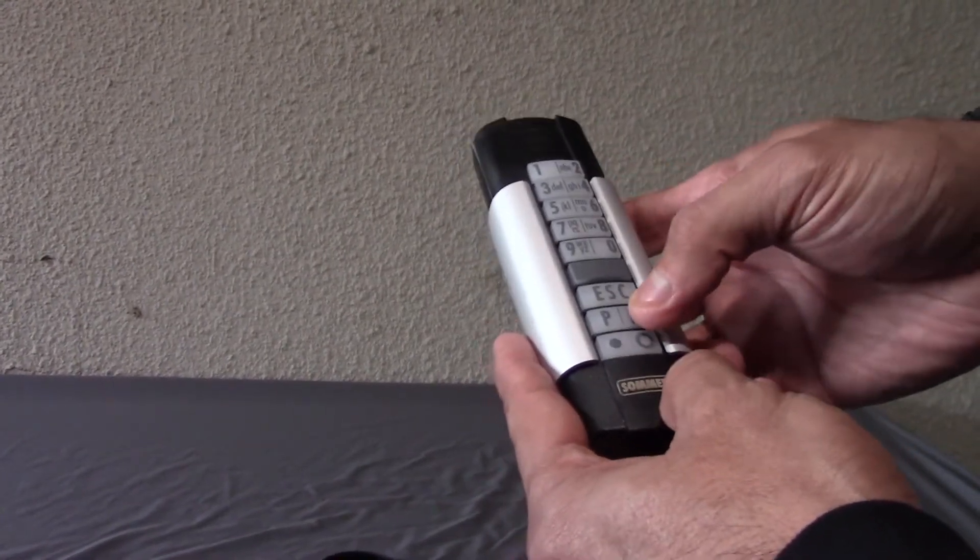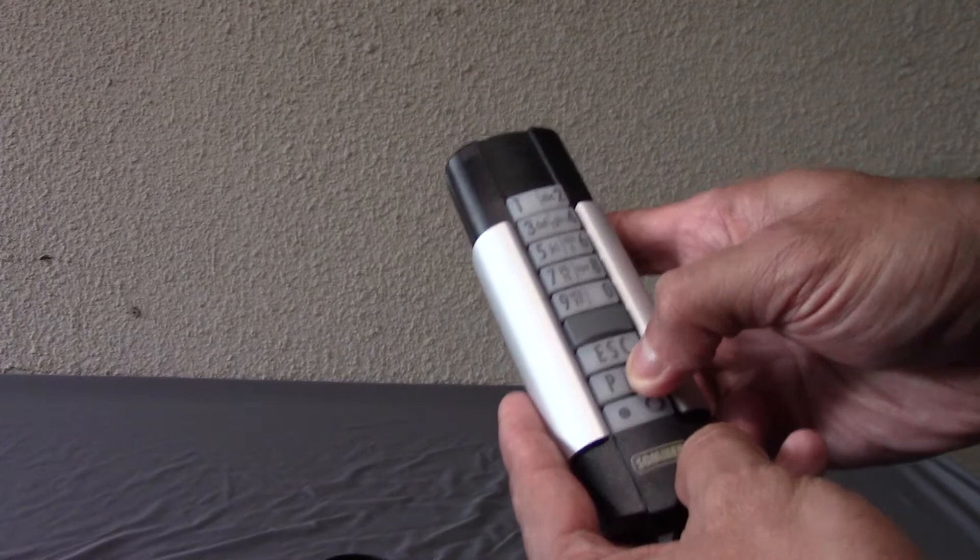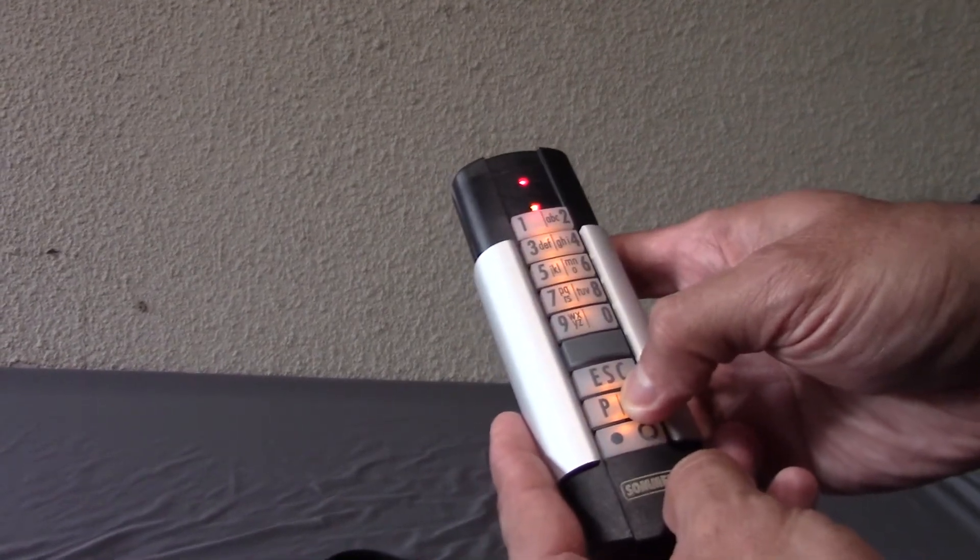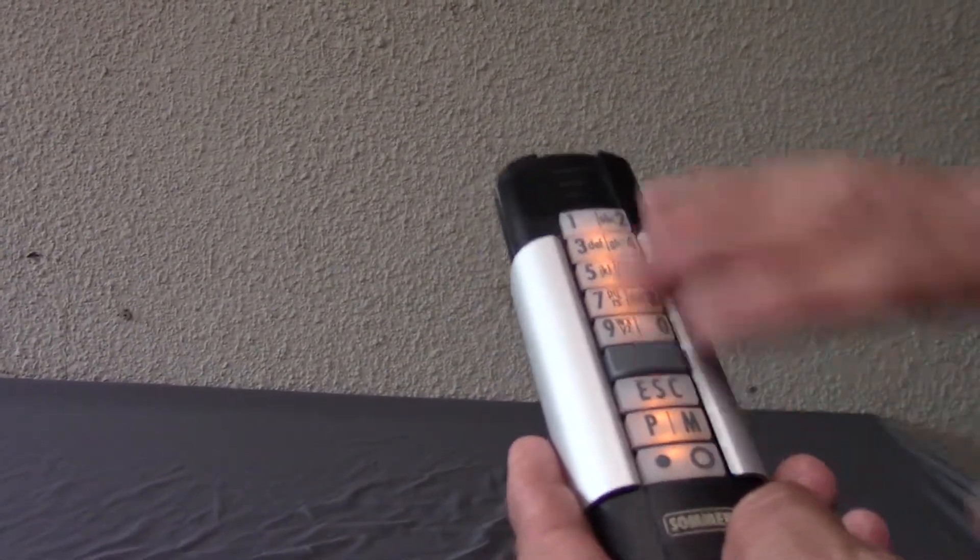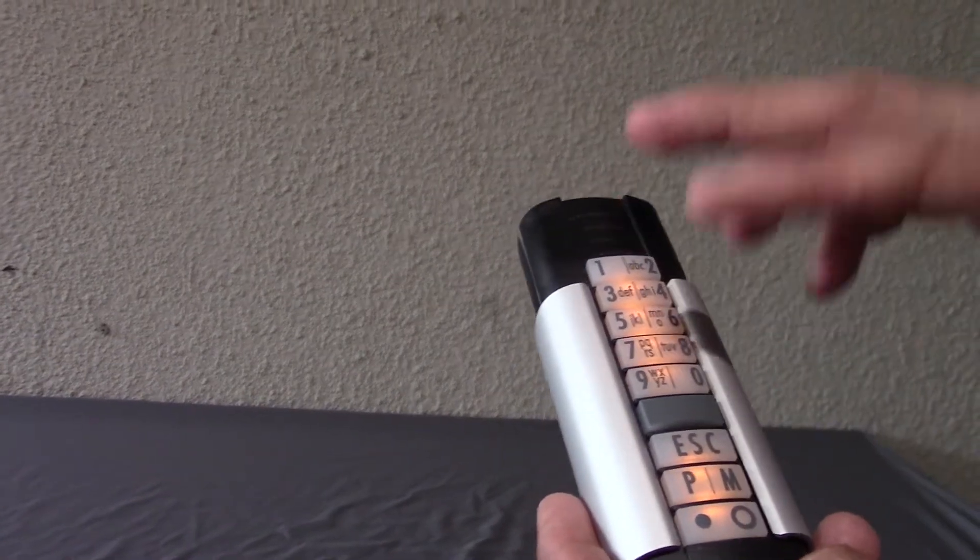First, you have to press the letter M until you see the LED light up. You'll see the red LED and the backlight. This is when you know that the keypad is on.